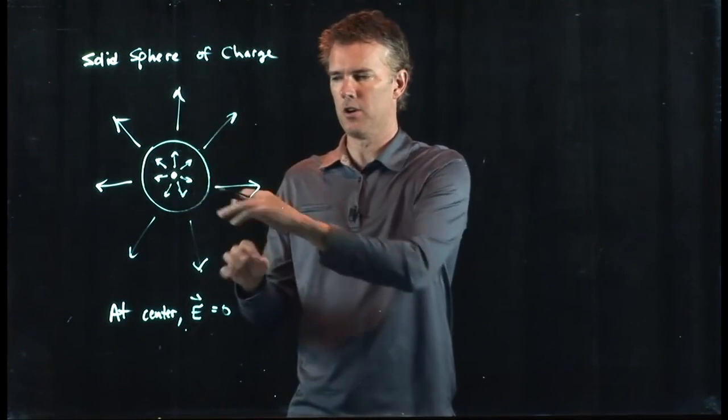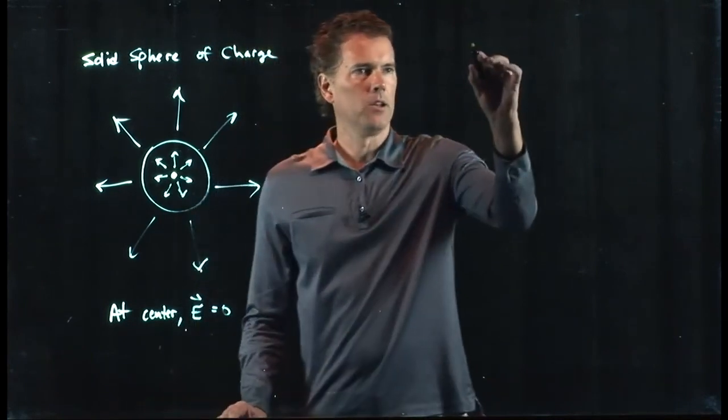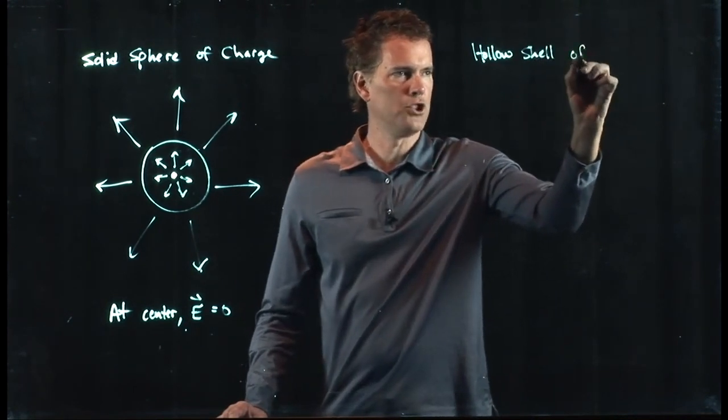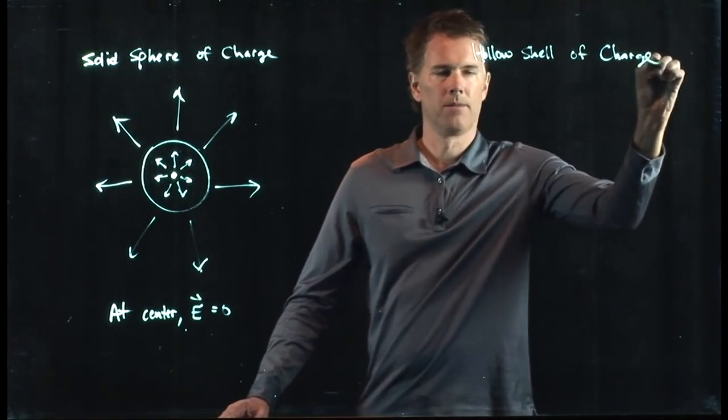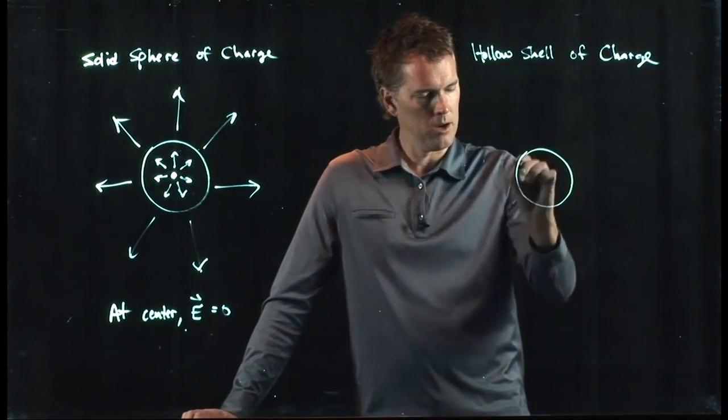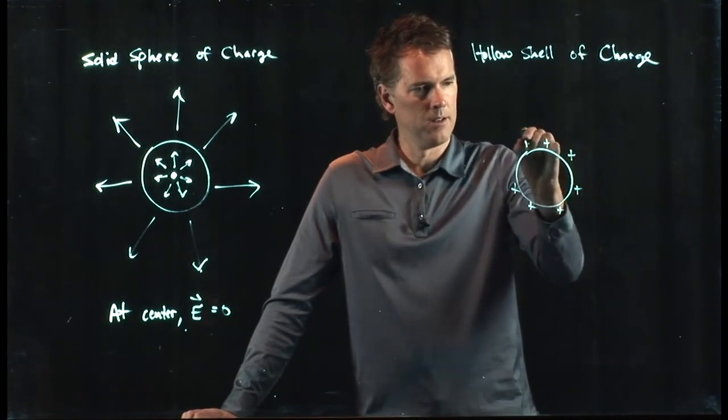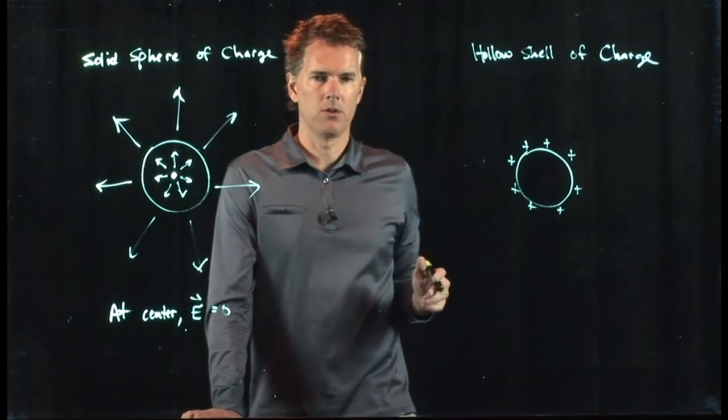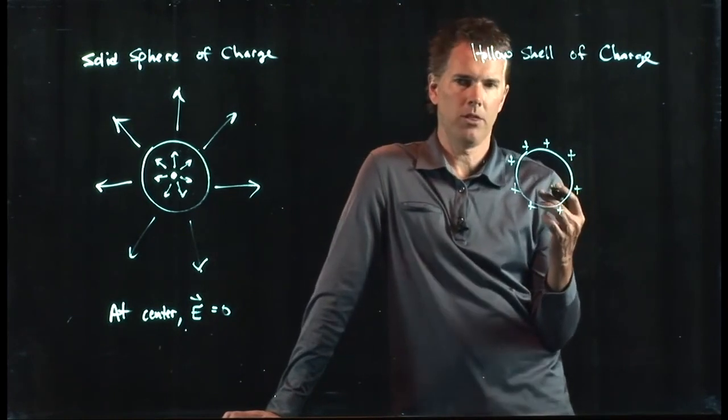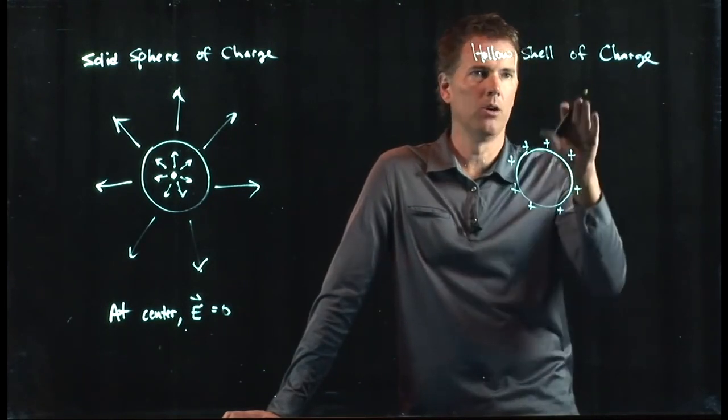This is a solid sphere of charge, charge everywhere distributed throughout the sphere. Now let's take a look at a different example, which is a hollow shell of charge. If I think about a hollow shell, here it is. I'm just going to put charge all the way around the outside. And if I put charge all the way around the outside, what do you think the electric field looks like on the outside? Catherine, what do you think? Which way should I draw my electric field on the outside of this hollow shell?